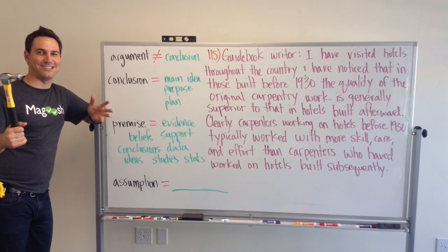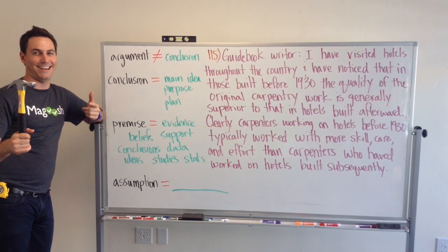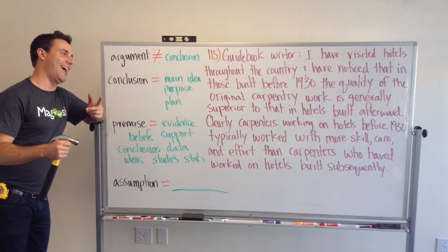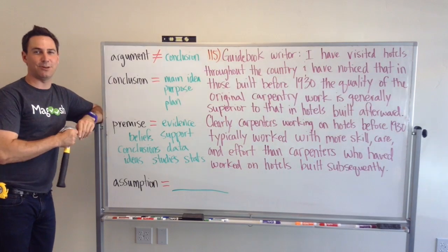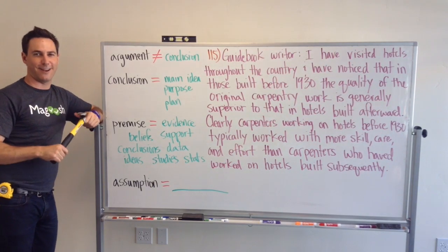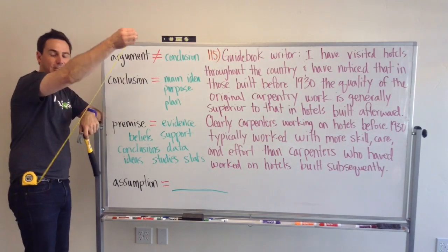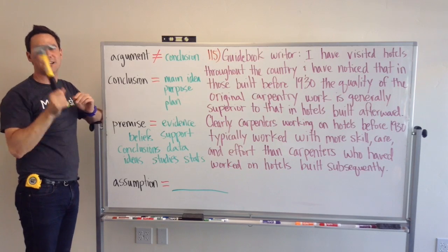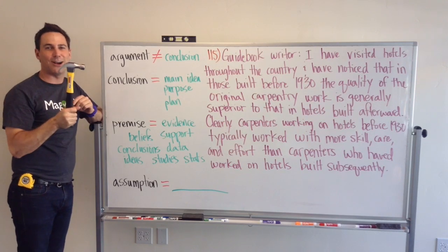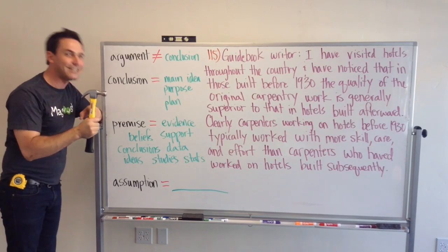Welcome to G-Map Tuesdays! My name is Kevin, this is a hammer, and it is Tuesday. You might be wondering why does Kevin have a hammer and his handy tape measure? That's because we have an example about carpentry. But before we get to that,